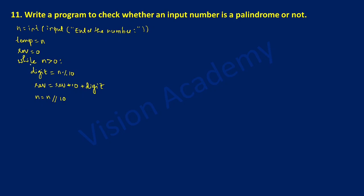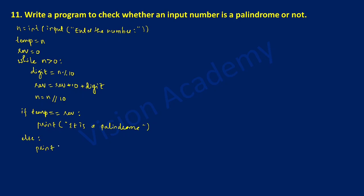Once the condition is false, control comes out of the iterative statement and executes the next statement. Here I'm going to write: if temp double-equal-to rev, then colon. After indentation, I'm going to write print, and in double quotation marks: 'it is a palindrome'. Else, aligned with the if, put colon, then with indentation, print: 'it is not a palindrome'.